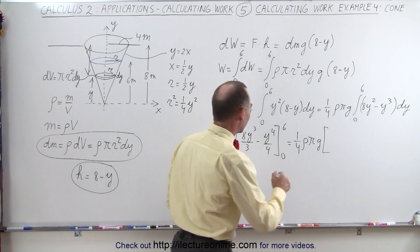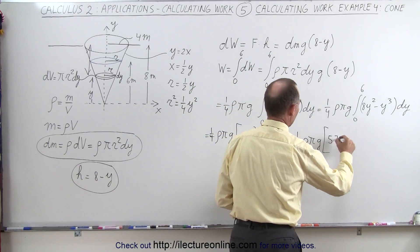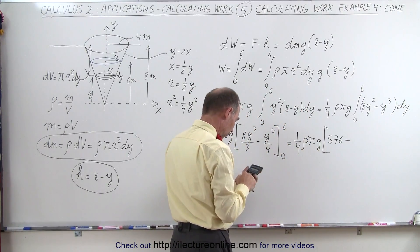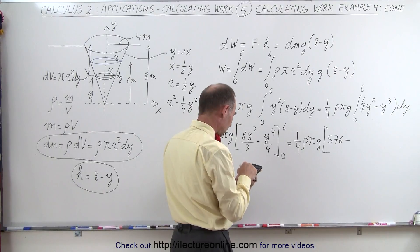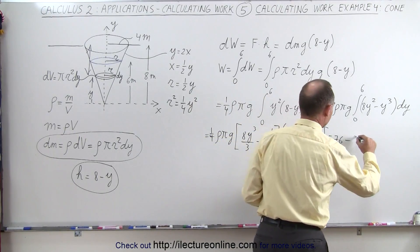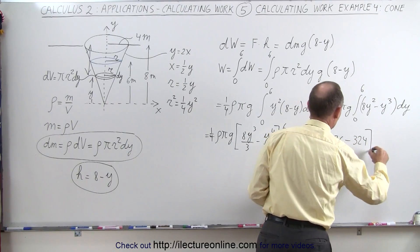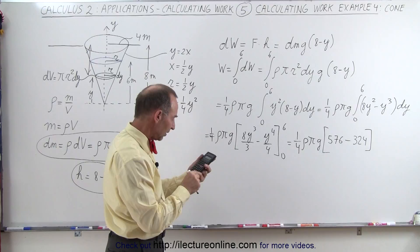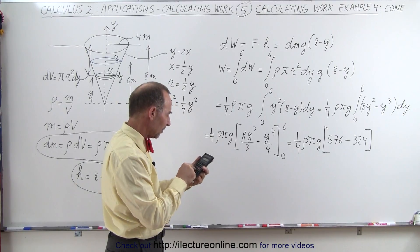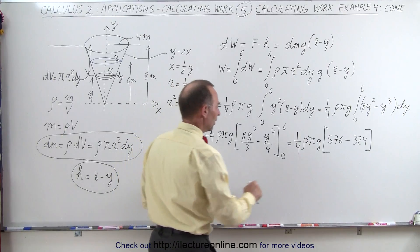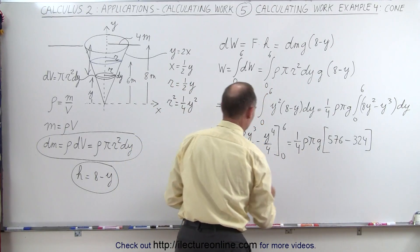We get 576 minus 6 to the 4th power, that's 36 squared, divided by 4 equals 324. And if we subtract 324 from 576, let's see here, so we have 576 minus 324, that gives 252 divided by 4, so that would be 252 divided by 4 times the density times pi times g.